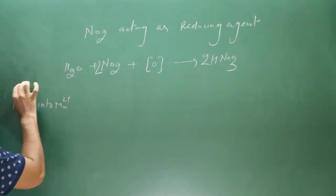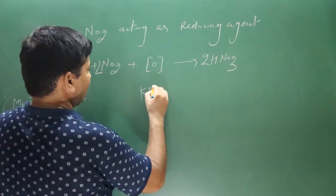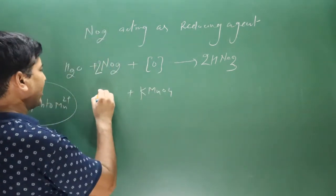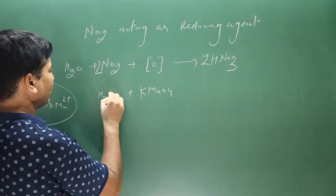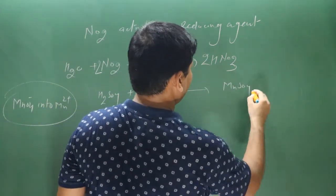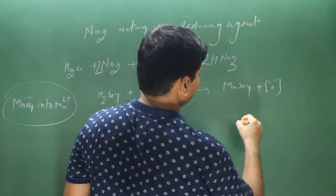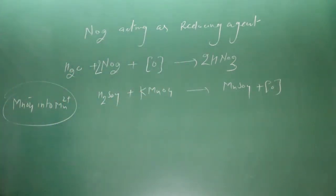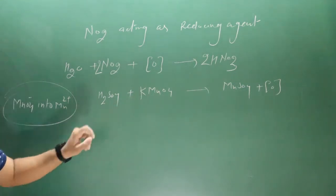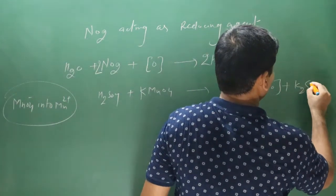Nitrogen dioxide reduces permanganate ion (MnO4−) into Mn2+. This reaction takes place in acidic medium using H2SO4. Products include MnSO4, and potassium combines with sulfate ion to form K2SO4.